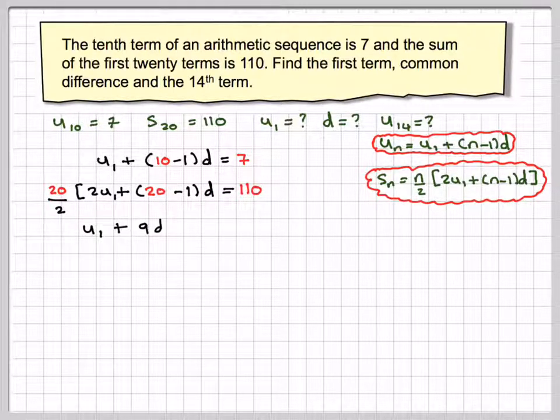So we're going to have 20 over 2 times 2U1 plus 20 minus 1 D is equal to 11. So from this one here, we're going to get, sorry, it's equal to 110. From 1, we're going to get that U1 plus 9D is equal to 7.